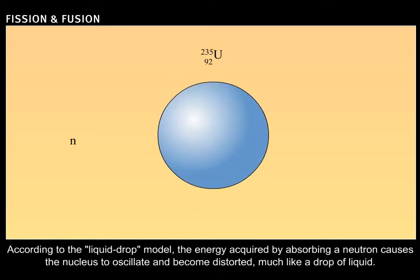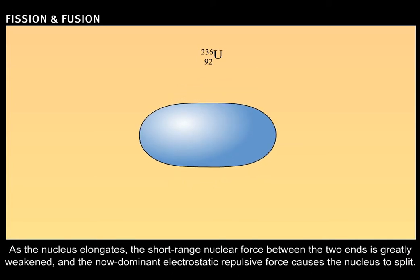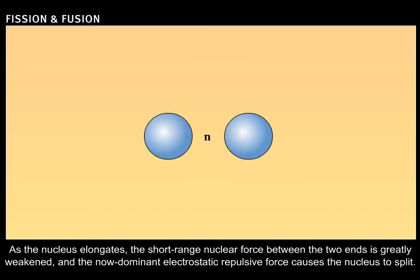According to the liquid drop model, the energy acquired by absorbing a neutron causes the nucleus to oscillate and become distorted, much like a drop of liquid. As the nucleus elongates, the short-range nuclear force between the two ends is greatly weakened, and the now-dominant electrostatic repulsive force causes the nucleus to split.